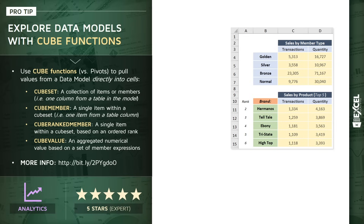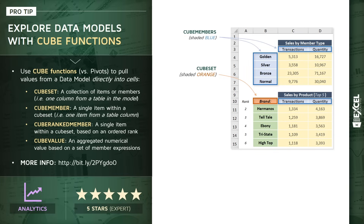In my experience, there are four types of cube functions I use almost exclusively. The first is called a cube set, and essentially a cube set is a collection of items or cube members from your model — it's equivalent to an entire column from a table. In this case, we've defined a cube set that contains information about product brands.